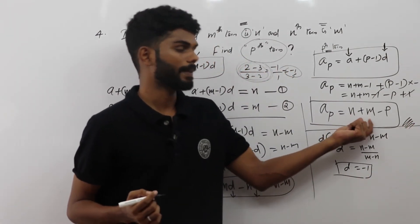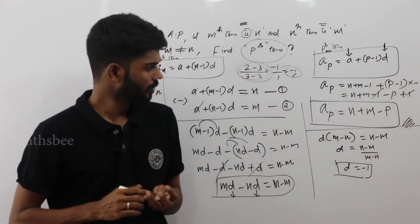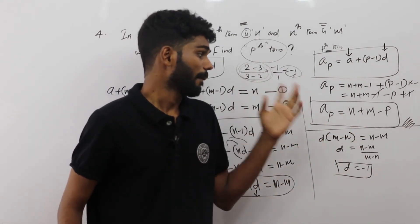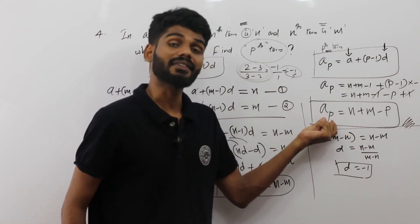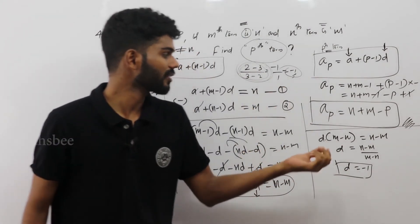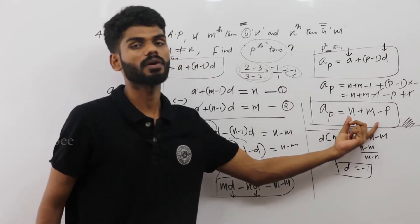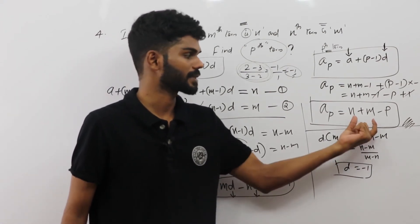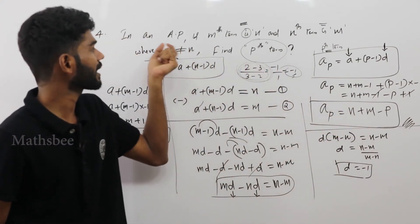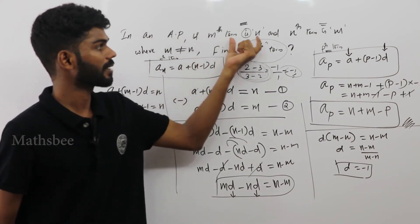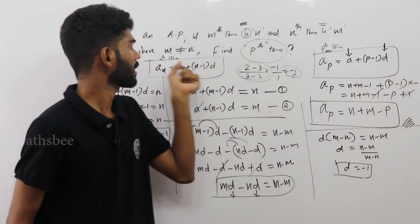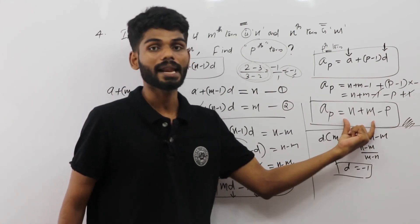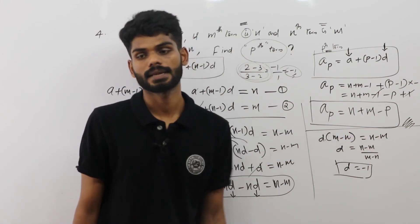The Pth term is N plus M minus P. In AP, if the Mth term is N and the Nth term is M, then the Pth term equals N plus M minus P. This is the generic form.